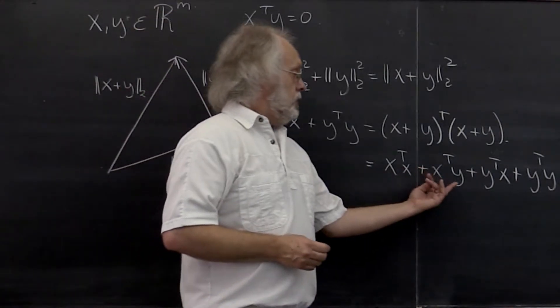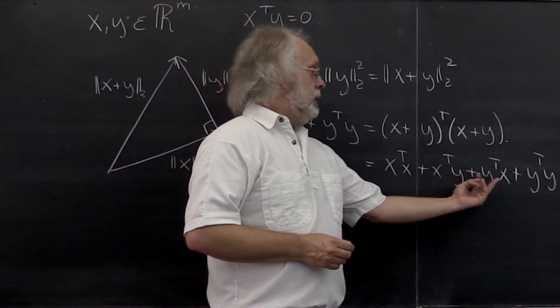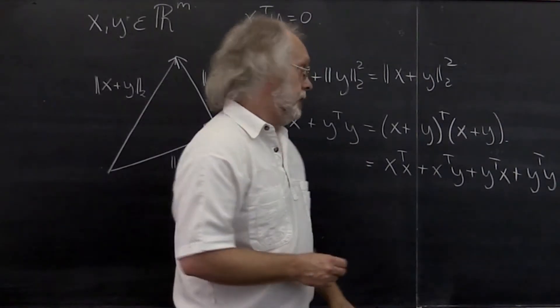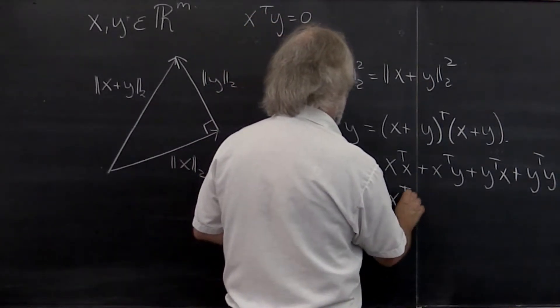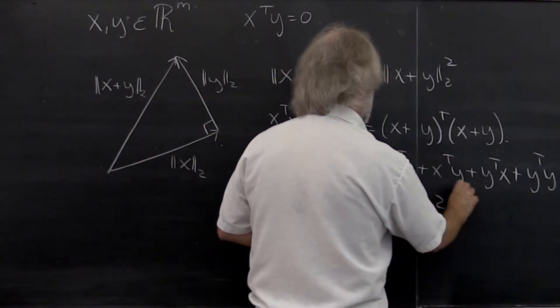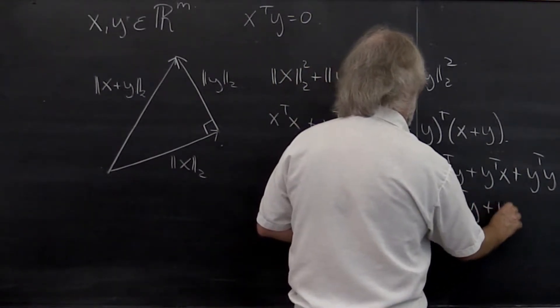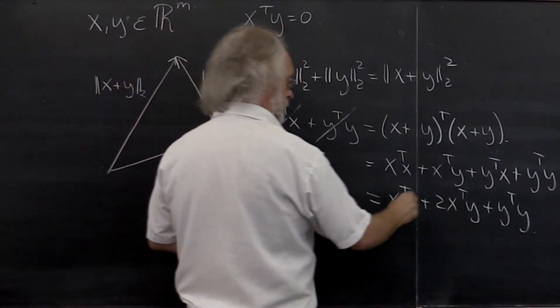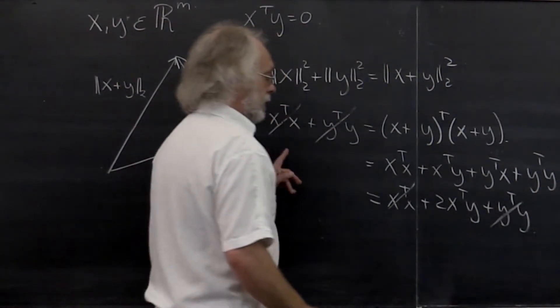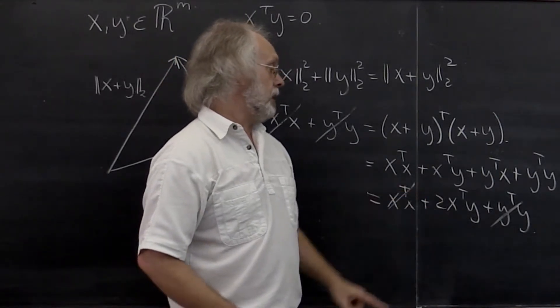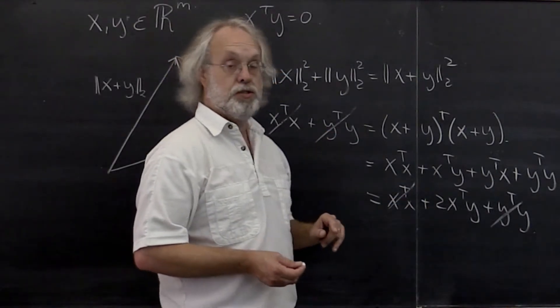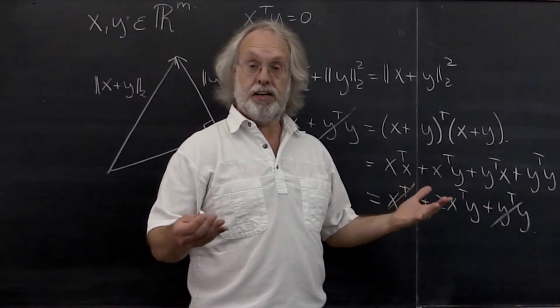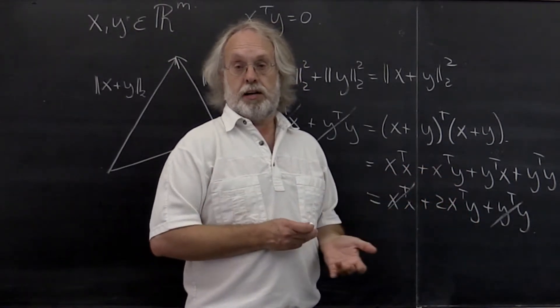But notice that x transpose y is equal to y transpose x if these vectors are real valued. And therefore this becomes x transpose x plus 2 times x transpose y plus y transpose y. And then you can cancel this and this against this and that. And you find that two times the dot product of x transpose y must be equal to zero. And therefore if x and y are not zero vectors, their dot product must be zero.